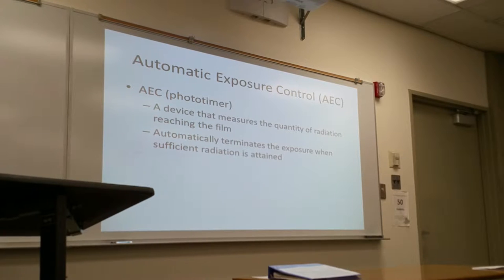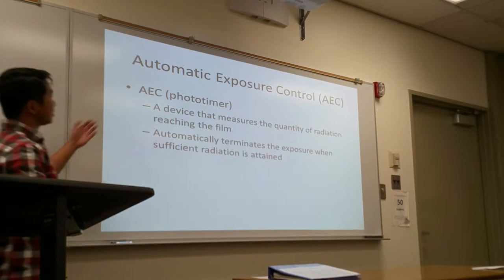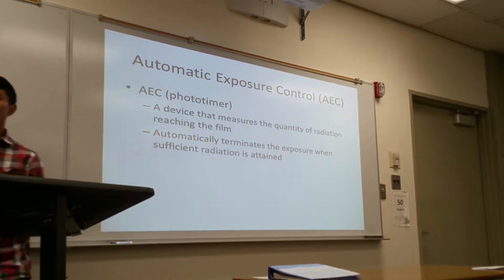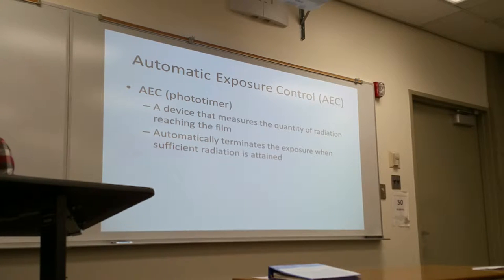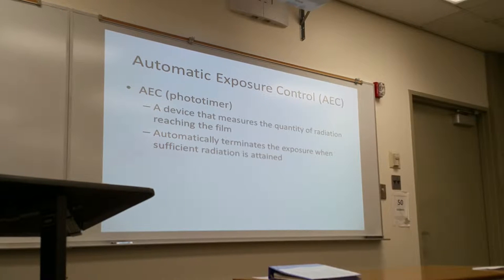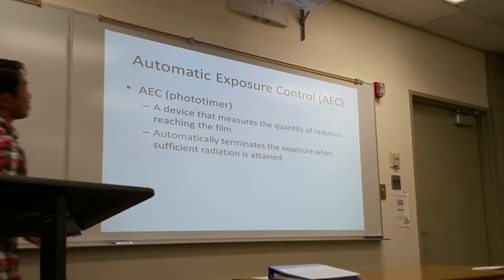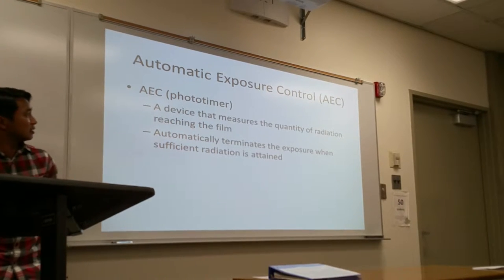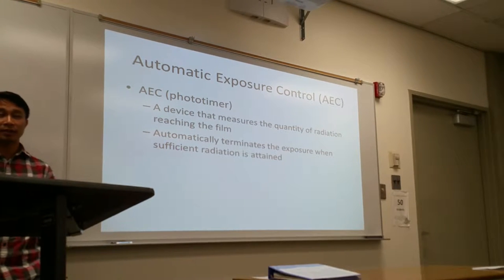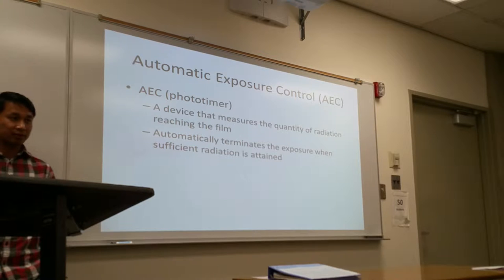A type of timer called an automatic exposure control timer — AEC timer, also known as a phototimer. The purpose of the AEC timer is just a device that measures the amount of radiation reaching the film. When the amount of radiation has reached the threshold, which is being based on the sensor, it will automatically terminate the exposure.